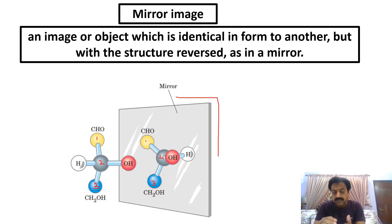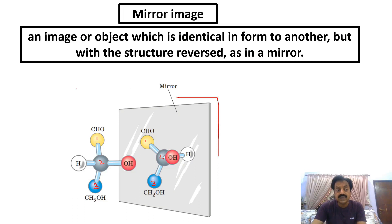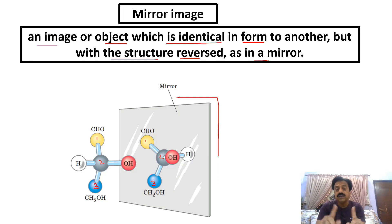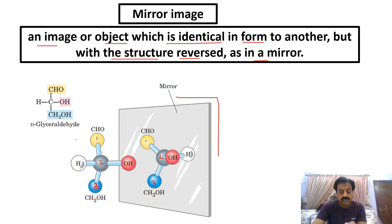So dear students, in this mirror image, what is on the right side appears on the left in the mirror, and what is on the left appears on the right in the mirror. This is called a mirror image — an image or object which is identical in form to one another but with the structure reversed in a mirror. The structure is completely similar but reversed.